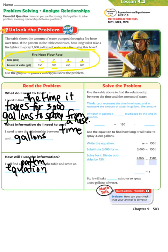Use the table to find the relationship between time and the amount of water. Let T represent the time in minutes, and W represent the amount of water in gallons. The amount of water in gallons is 150 multiplied by the time in minutes. So, W equals 150 times T, where T is time.